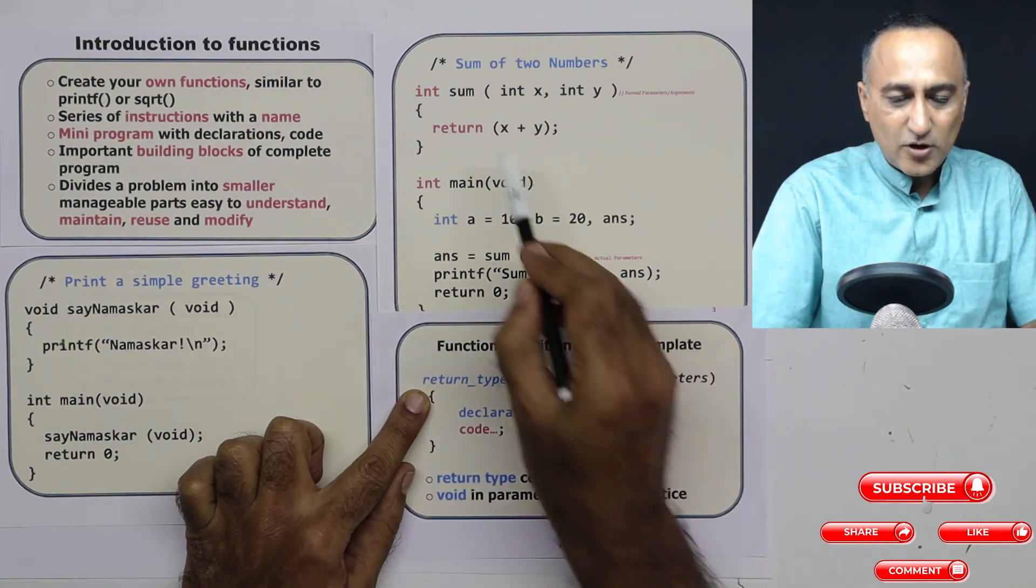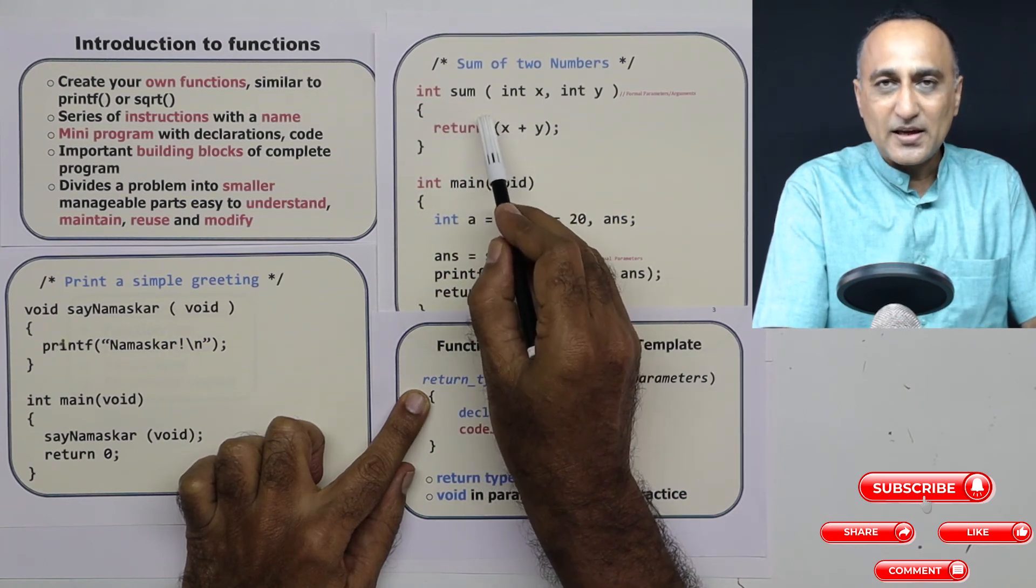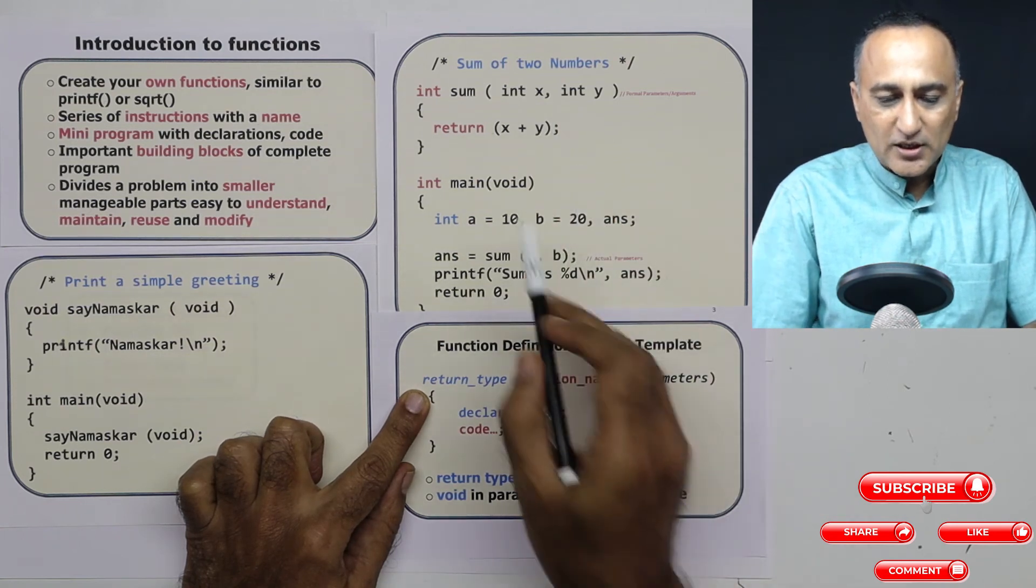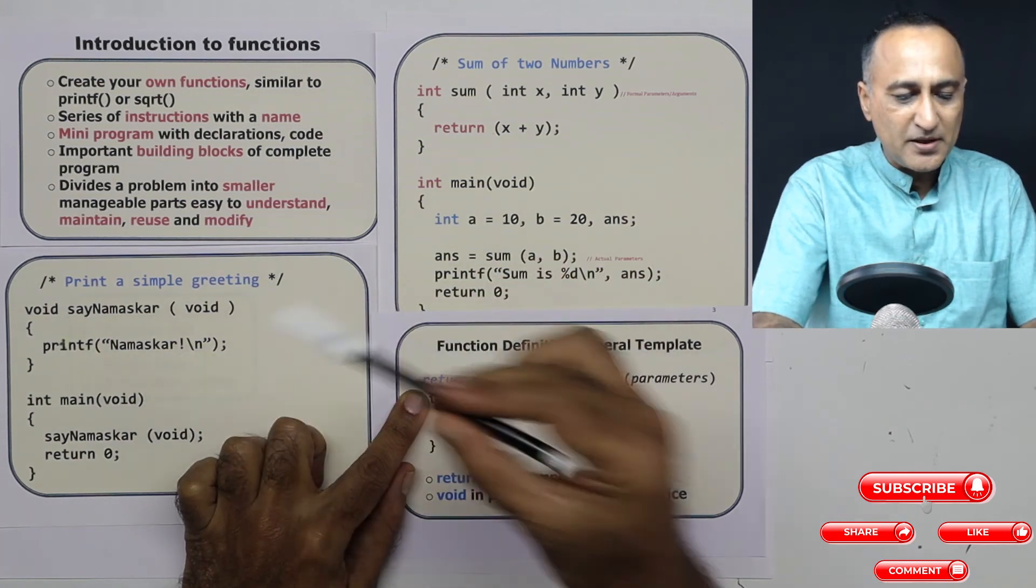Declarations. I have not declared any variables here, but the function can have its own variables like i, j, k, whatever it is. So I don't have any declarations. The code here happens to be x plus y, the code here happens to be print namaskar.